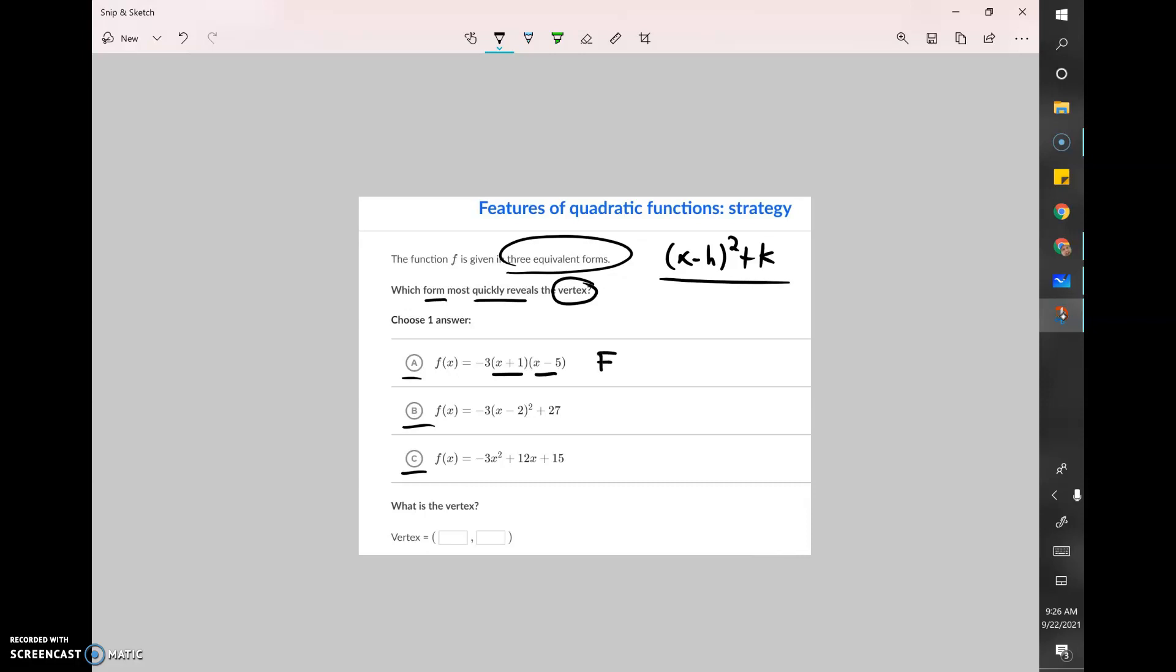Option A we got two factors here, this is factored form. Option B we've got a perfect square plus a constant, that looks exactly like vertex form. With my eyeballs I can see the parallels here. I can see the little square. And then the last one just to cover it is in standard form x squared, Bx plus C.